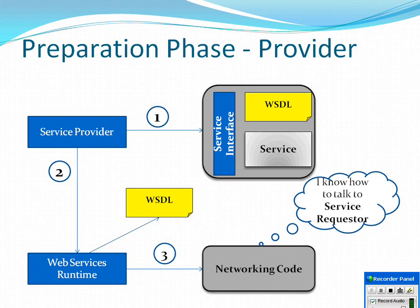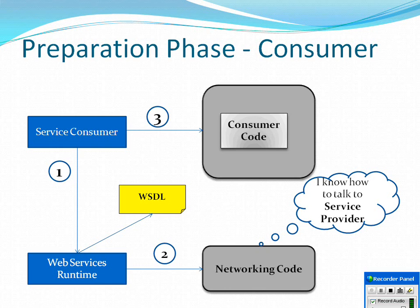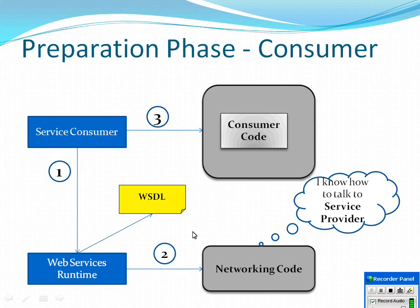This networking code is aware of how to talk to web services or a consumer. We call this the skeleton. On the consumer side, the consumer either finds the WSDL document from the repository, or obtains it through other means. Using the web services runtime with the same WSDL document provided by the producer, the consumer generates its own networking code, which can interact with the producer's networking code. This is called the stub.